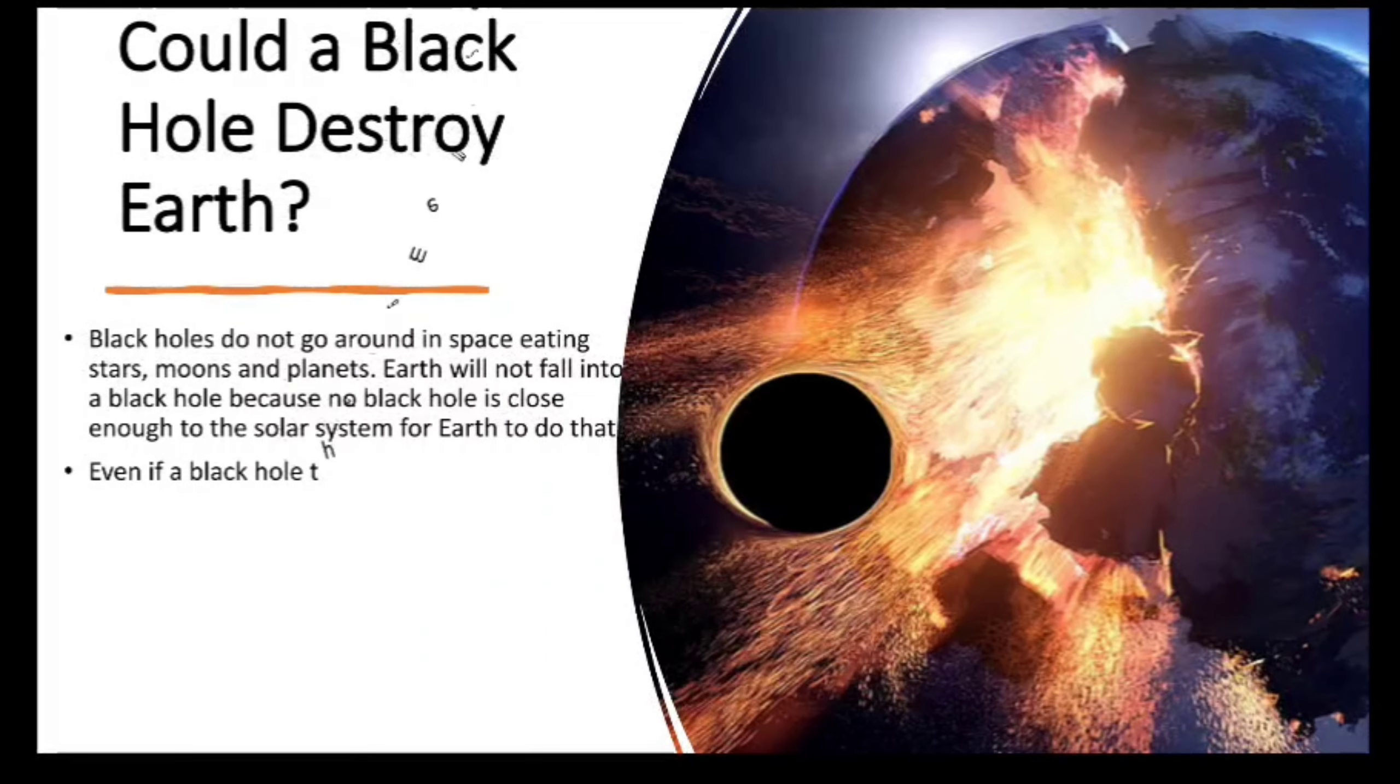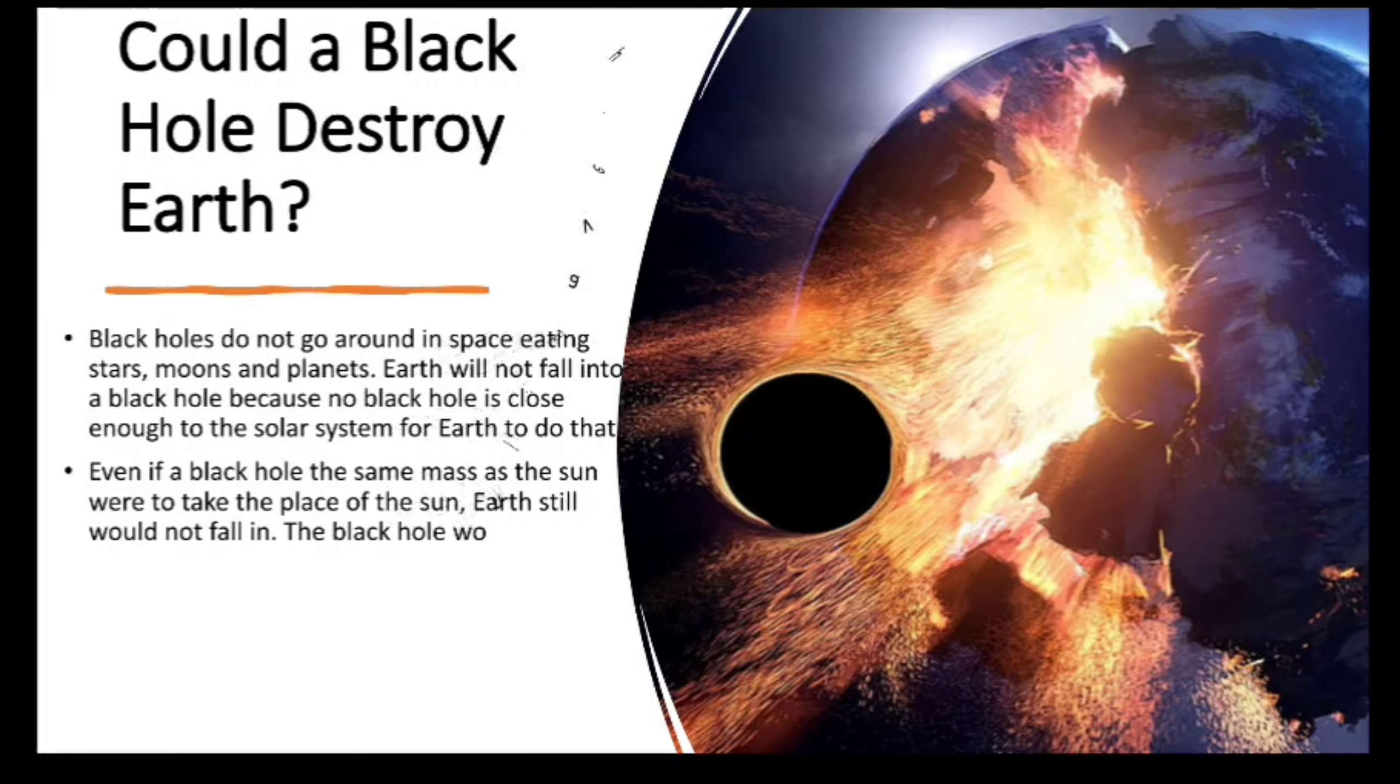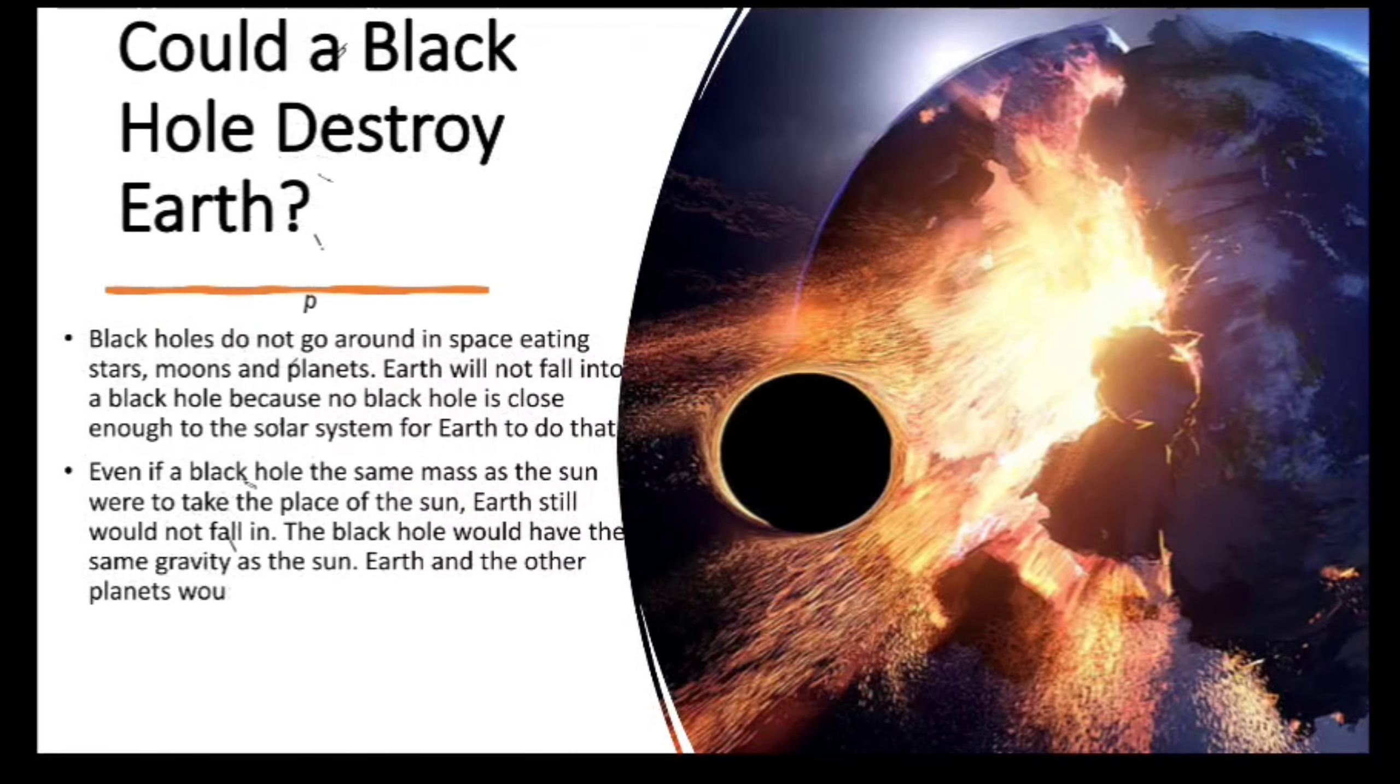Even if a black hole the same mass as the Sun were to take the place of the Sun, Earth still would not fall in. The black hole would have the same gravity as the Sun. Earth and the other planets would orbit the black hole as they orbit the Sun now.